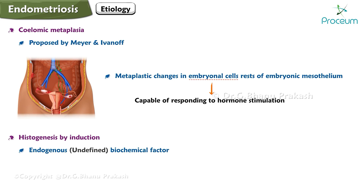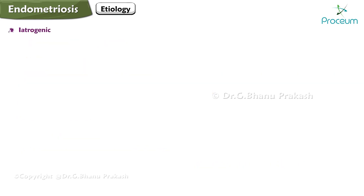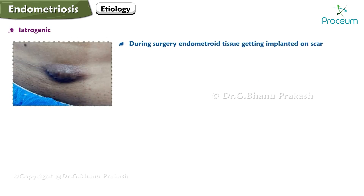These cell rests are capable of responding to hormonal stimulation. The histogenesis by induction theory proposes that an endogenous undefined biochemical factor can induce undifferentiated peritoneal cells to develop into endometrial tissue.